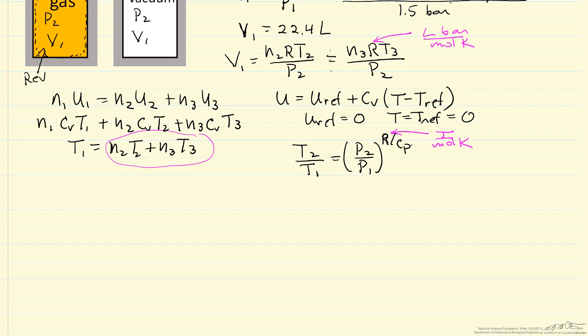so the pressure must be half of the original pressure. So it's an important point that the pressure we can directly say is 0.75 bar because we know the average temperature and we know we've doubled the volume.